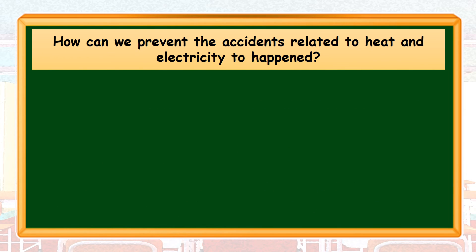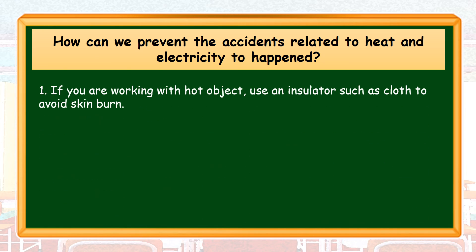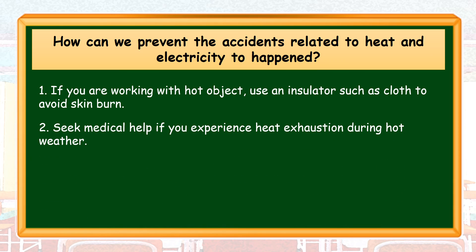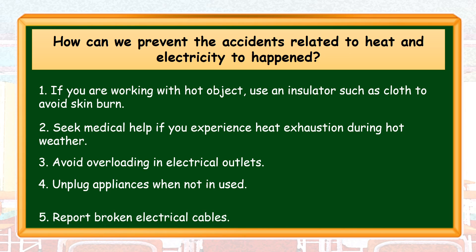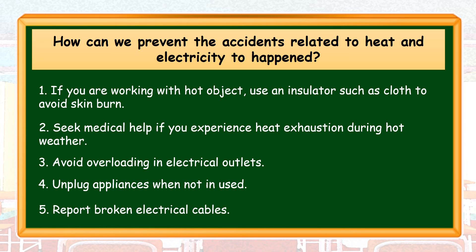Here are some ways to prevent accidents related to heat and electricity. Number 1, if you are working with a hot object, use an insulator such as cloth to avoid skin burns. Number 2, seek medical help if you experience heat exhaustion during hot weather. Number 3, avoid overloading electrical outlets. Number 4, unplug appliances when not in use. And number 5, report broken electrical cables.